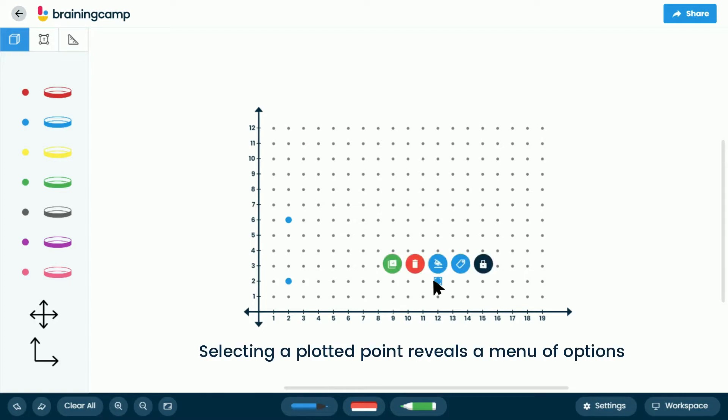Selecting a plotted point reveals a menu of options such as labeling its ordered pairs, copy, lock, and delete options.